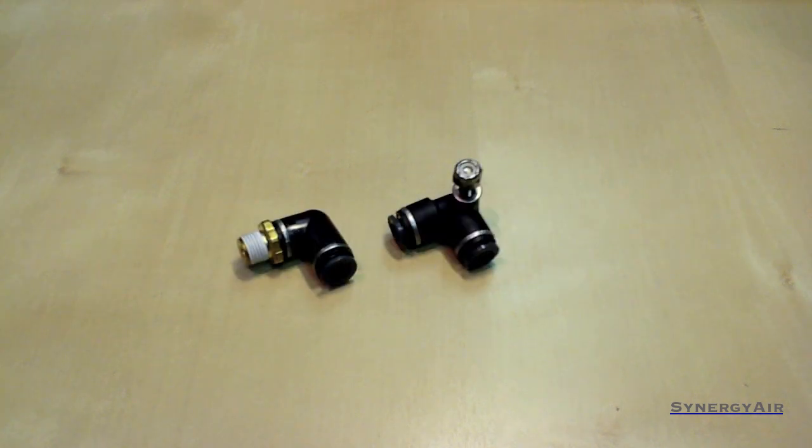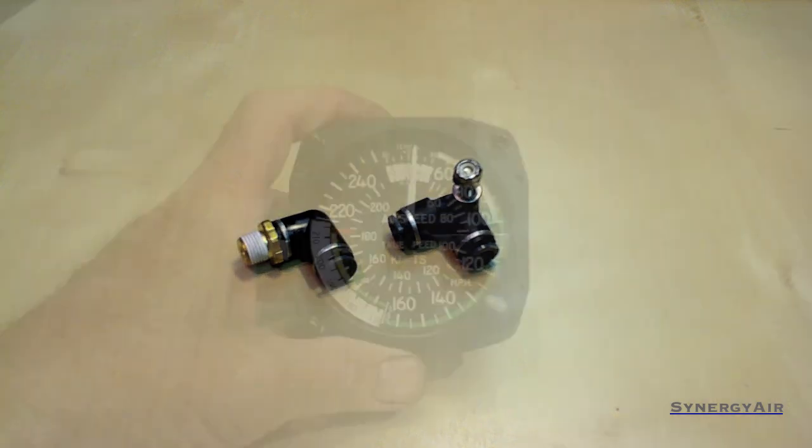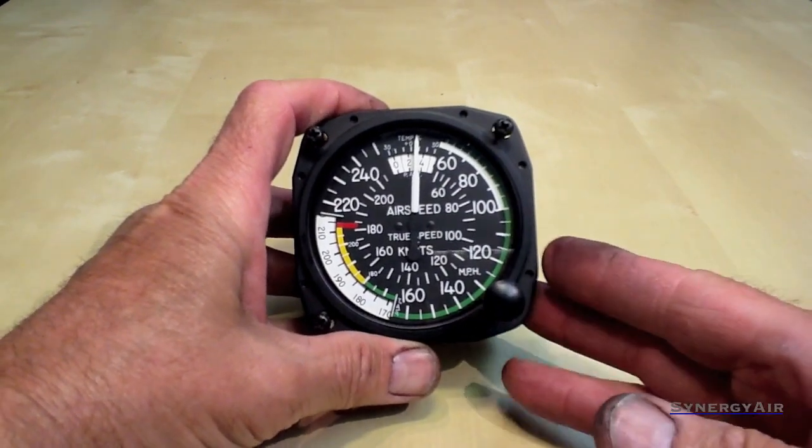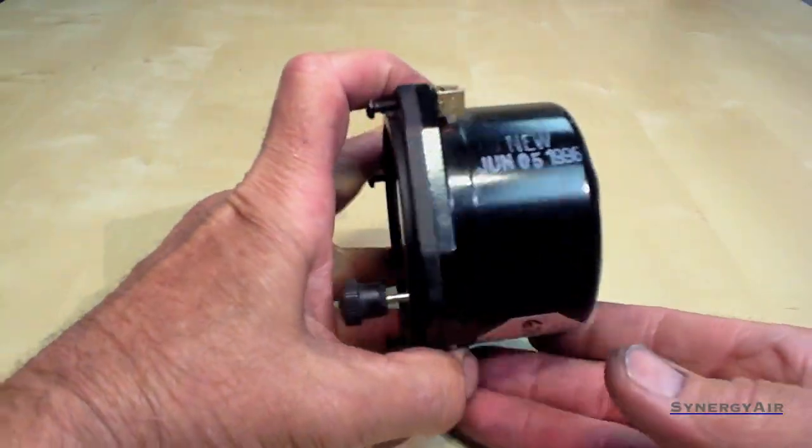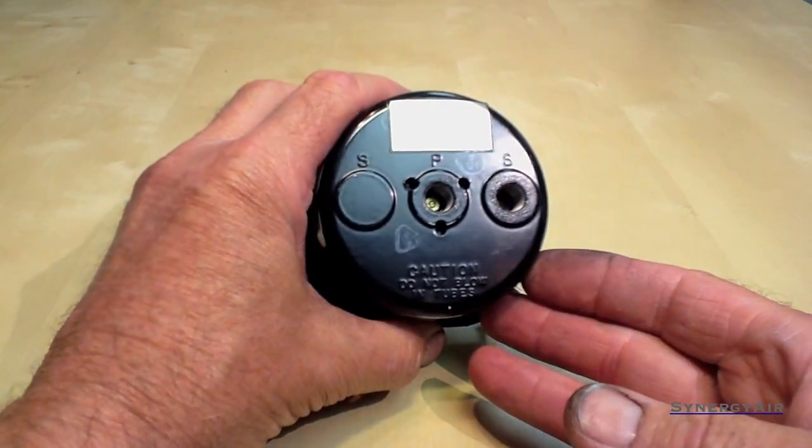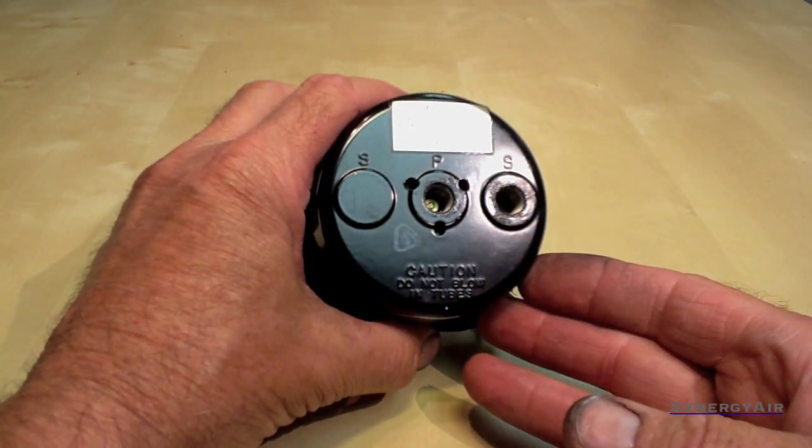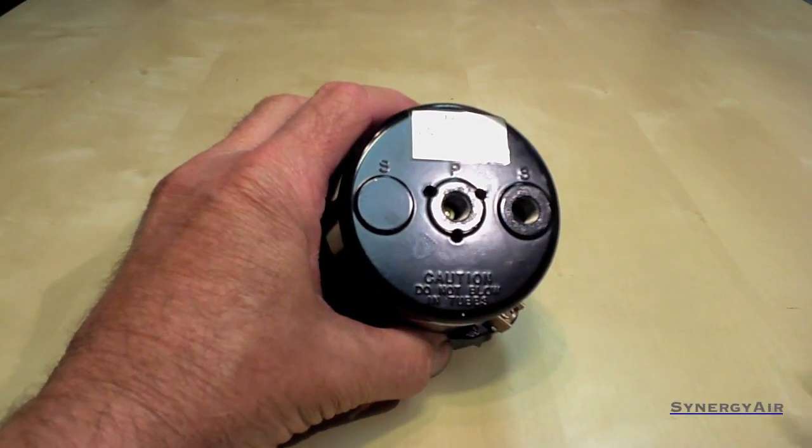And some 90 degree elbows. One that has a brass fitting national pipe thread one eighth inch. And two tubes coming in. These would often be used on the back of an airspeed indicator where the ports are actually quite close together. It allows you to rotate them and angle them down.